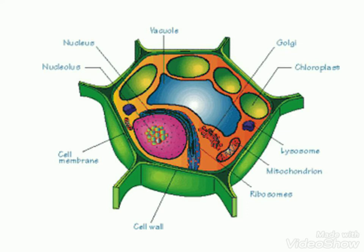Again, a cross-sectional view of a cell: nucleus, nucleolus, cell membrane, cell wall, ribosomes, mitochondria, lysosome, chloroplast, Golgi, vacuole. We learned all these parts — let's now learn more about the vacuole.